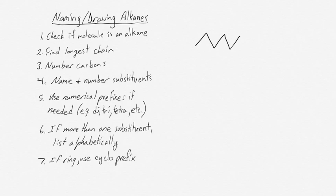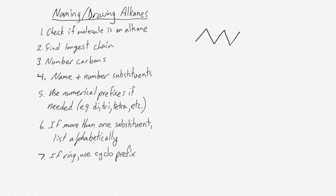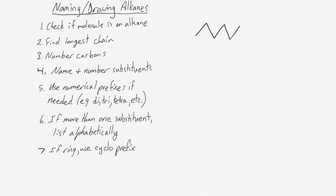Naming organic molecules requires following a series of rules developed by the IUPAC organization. The rules can quickly get complicated as your molecules get more complicated. In this course we'll only be getting you to name simple molecules. But in general, regardless of how complex the molecules get, the rules tend to follow a simple pattern.